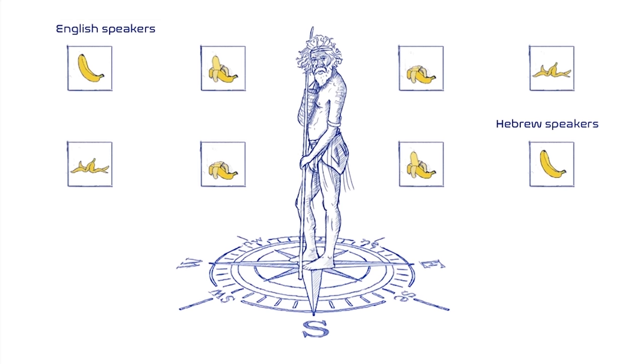So the Cook-Thaayorre not only knew what direction they were facing at every single moment, but they also used this spatial orientation to construct their representation of time.